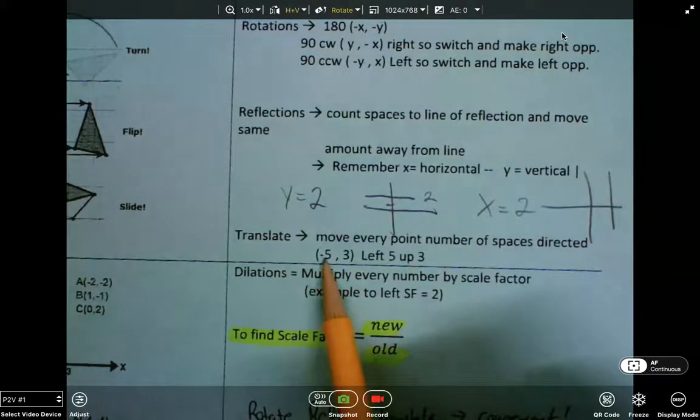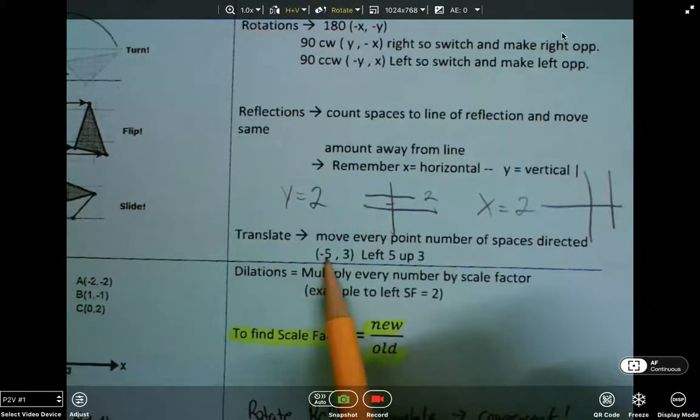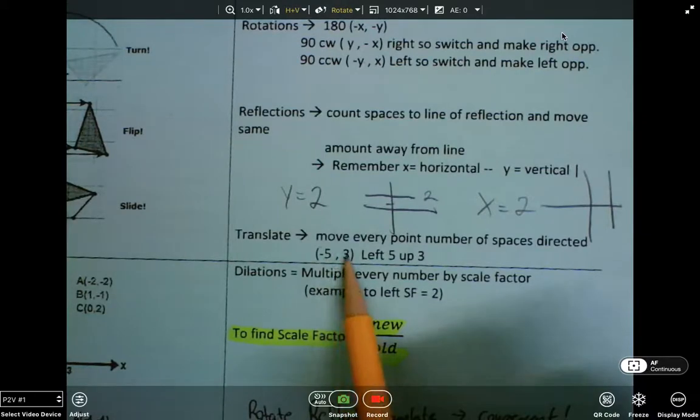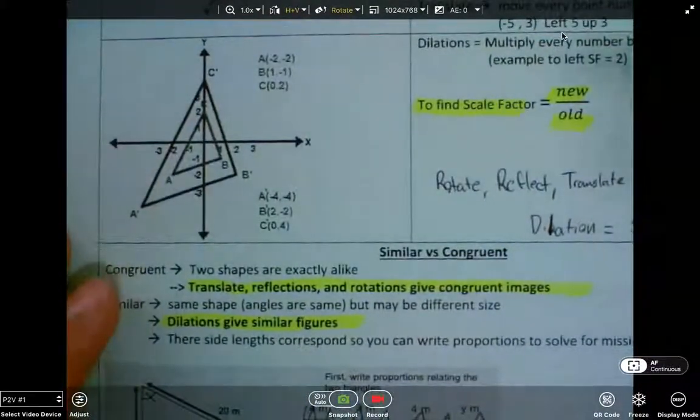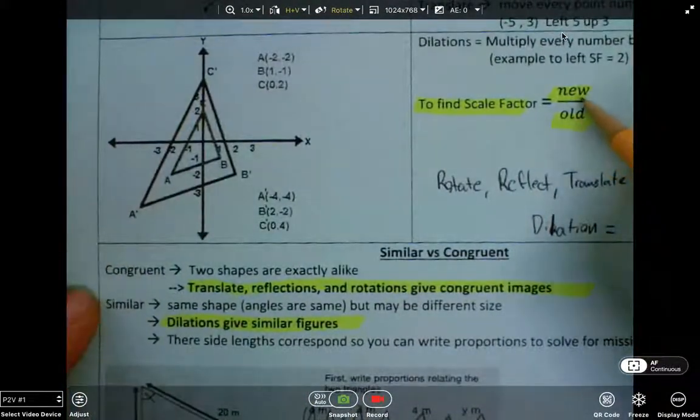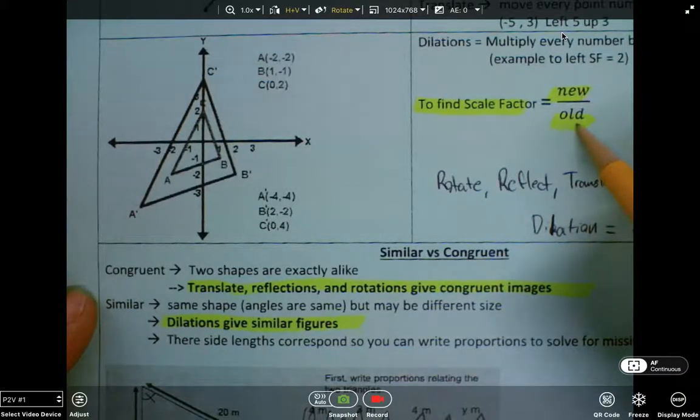In notation here, this would be left 5 and up 3. Dilations are the only things that make the figures bigger or smaller. To find a scale factor, you would take the new coordinates divided by the old coordinates.